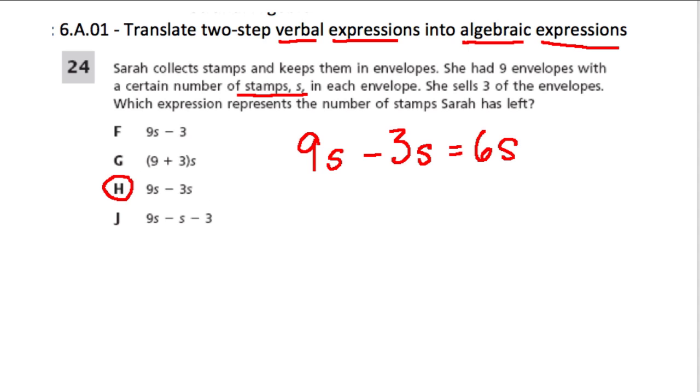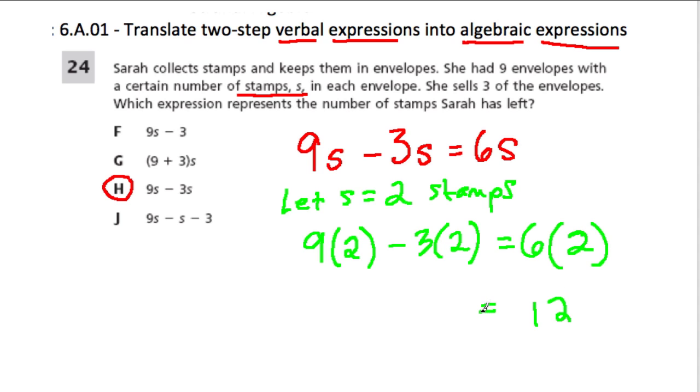But when you're dealing with problems like this, if you're feeling confused, plug in a number. So we can say, let S be two stamps. So if it was the case that every envelope had two stamps, let's see if our equation makes sense. So we have nine envelopes, each with two stamps. That's 18 stamps. Minus three times two, three envelopes with two stamps. That should be the same as having six envelopes left with two stamps each. So six times two is 12. And 18 minus six is 12. This works.